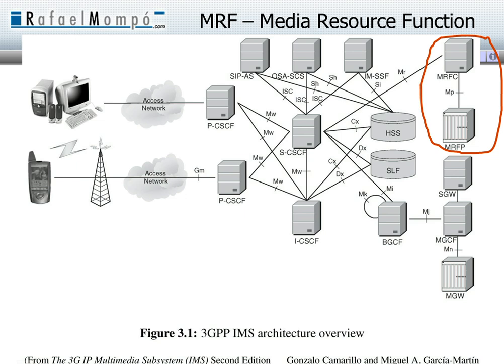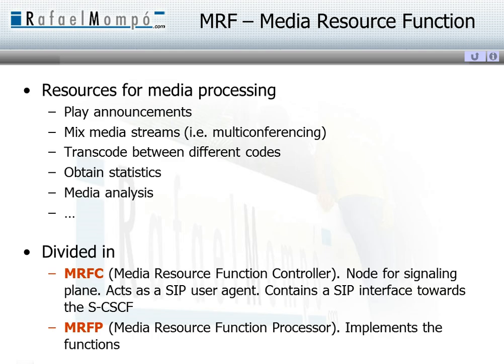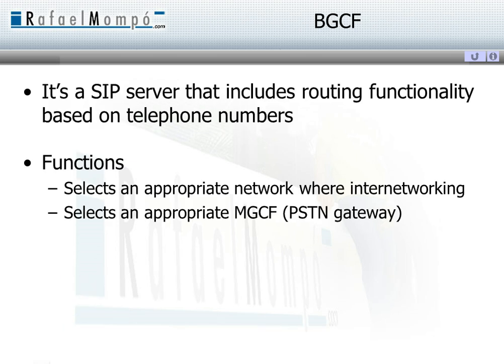The media resource function, MRF, is a kind of toolbox that facilitates multimedia processing, such as transcoding between different video and audio coding schemes. The MRF is divided in two functions in order to separate the signaling plane. There may be other toolbox elements that facilitate application development.